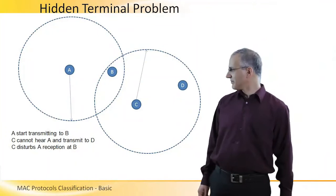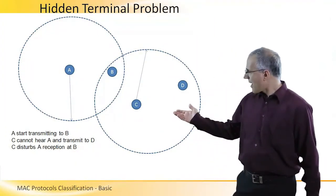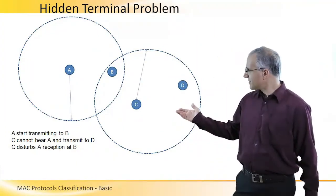Next, we're going to discuss the hidden terminal problem. I plotted here four stations A, B, C and D.